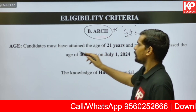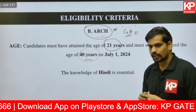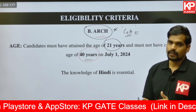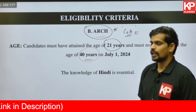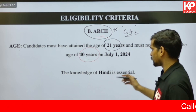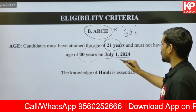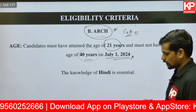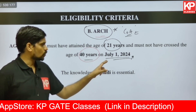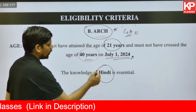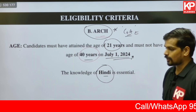There are additional eligibility criteria with respect to age. The candidate should be a minimum of 21 years of age and the maximum age limit is 40 years for the six unreserved posts. There will be age relaxation for reserved category posts. The cutoff date for the calculation of age is 1st of July 2024 — you should be within 40 years of age before this date. Knowledge of Hindi language is also essential in order to apply for these posts.